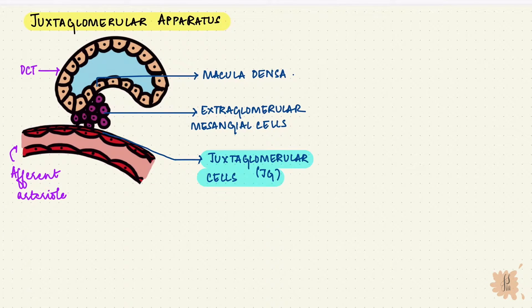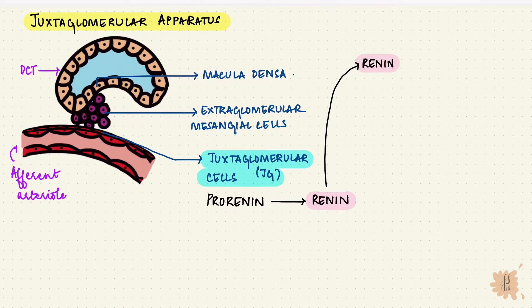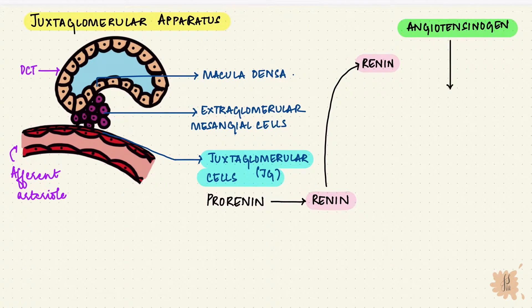These JG cells store pro-renin, which is an inactive form of renin. When stimulated, pro-renin molecules form renin, the active protein enzyme form. Since it's an enzyme, it has a substrate — that renin substrate is a globulin called angiotensinogen. Renin catalyzes the conversion of angiotensinogen to angiotensin-1, a peptide.